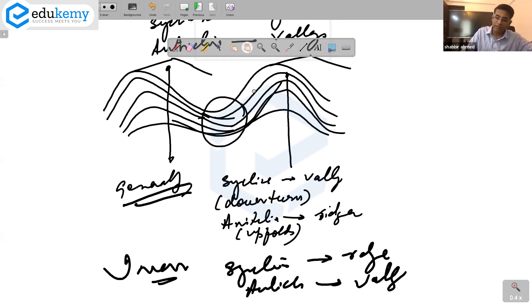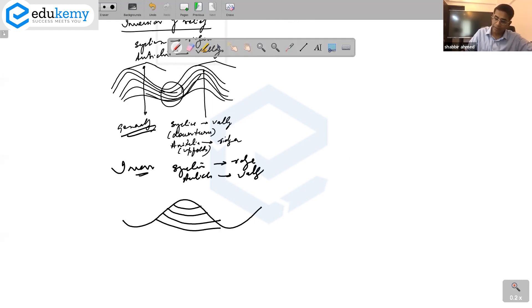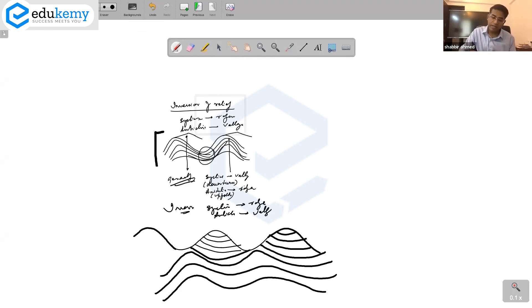The typical structural detailing of this will look like something like this, where this is the syncline bed. This also is the syncline beds. This is what is in general, and this is what is happening in inversion.